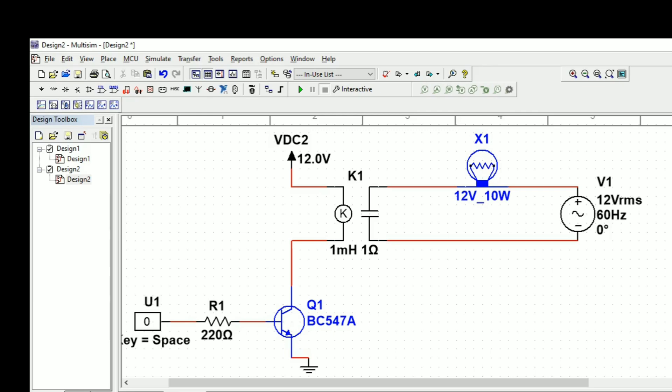The 12 volt will energize the coil of the relay, so that time this bulb is glowing. So let us see the simulation of this circuit.